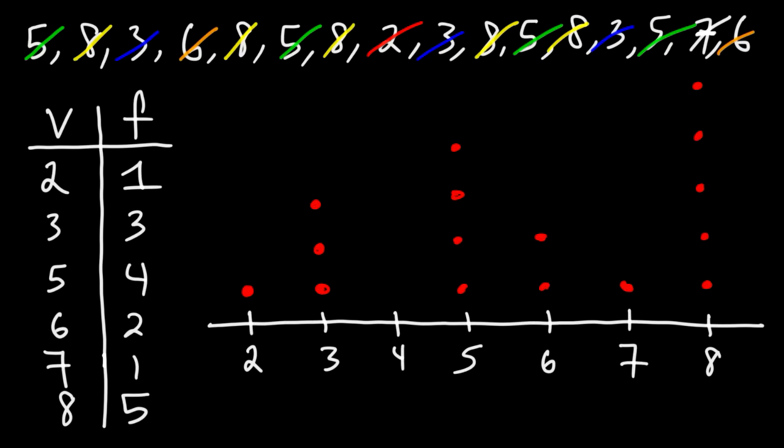Now, looking at the dot plot, what number in our list is the mode? The mode is the number with the highest frequency, in this case with the greatest number of dots. So 8 is the mode in this example.